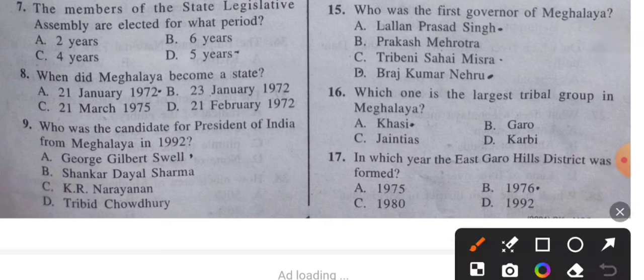Question 7: Members of the State Legislative Assembly are elected for what period? The answer is five years. Question 8: When did Meghalaya become a state? The answer is January 21, 1972.